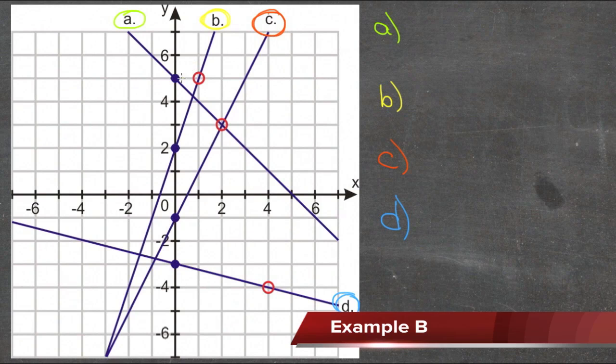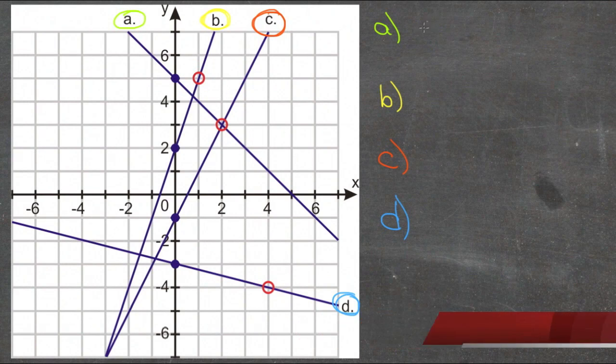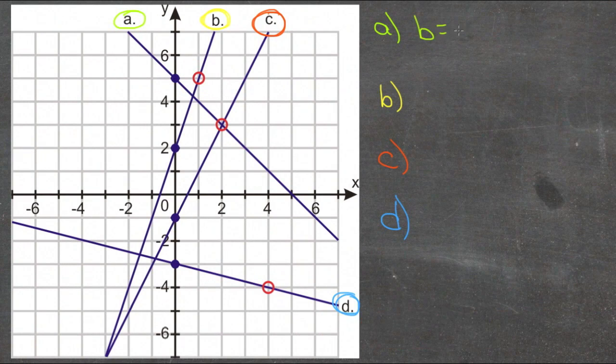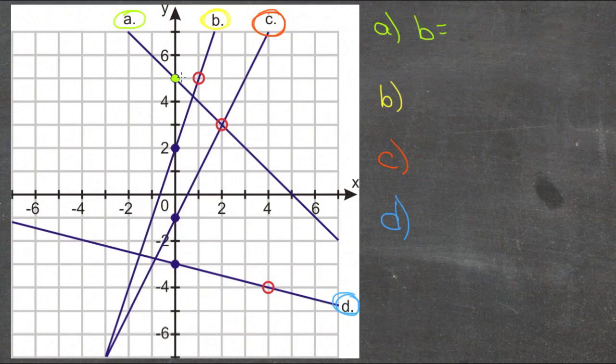So for line A here, the first thing we need to do is find our b, which is our y-intercept, and that's the place where the line crosses the y-axis. You can see it marked here with a blue dot, now it's a green dot. So the line crosses the y-axis at 5. That means that our b is 5, or our y-intercept is 5.